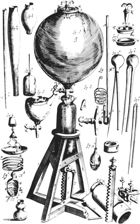Gas is one of the four fundamental states of matter, the others being solid, liquid, and plasma. A pure gas may be made up of individual atoms, e.g. a noble gas like neon, elemental molecules made from one type of atom, e.g. oxygen, or compound molecules made from a variety of atoms, e.g. carbon dioxide. A gas mixture would contain a variety of pure gases, much like the air.